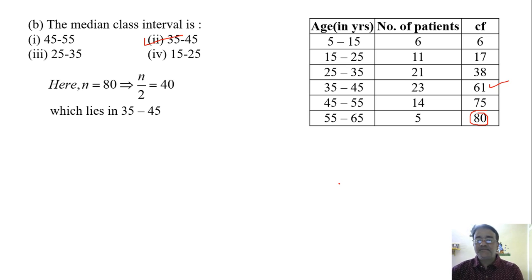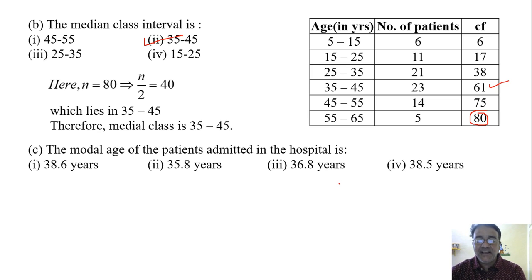Now third question: modal age of the patients admitted in the hospital. We have to find mode. What is L here? 35. And this is the highest frequency, we'll write as F1, and this is F0.